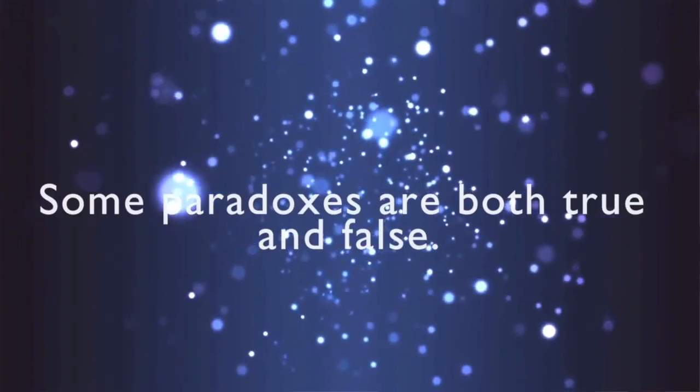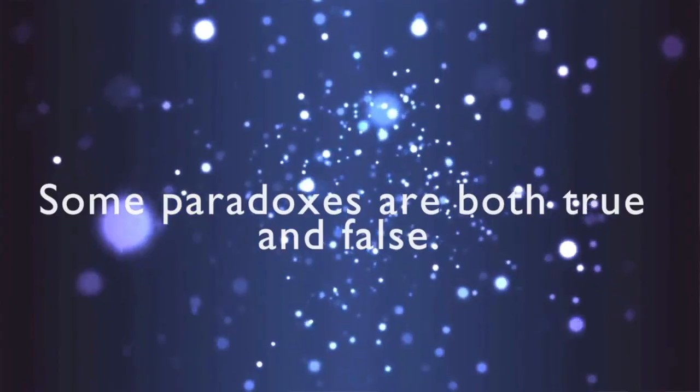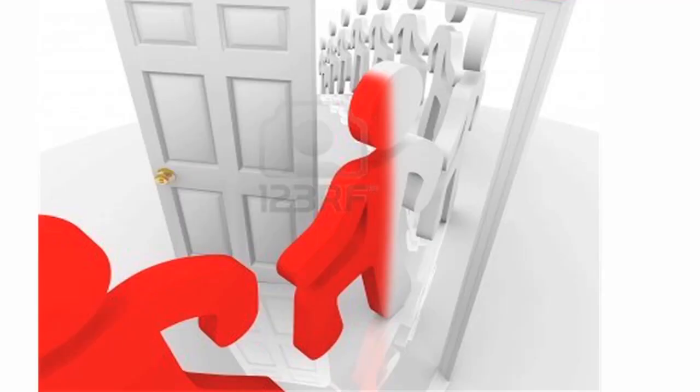Some paradoxes are both true and false. For example, what if you walked into a room and stood in the doorway — one foot inside the room and one foot outside? You are at the same time both inside and outside of the room. Then I ask you, are you in the room? You have no answer, because you are inside and you are not.